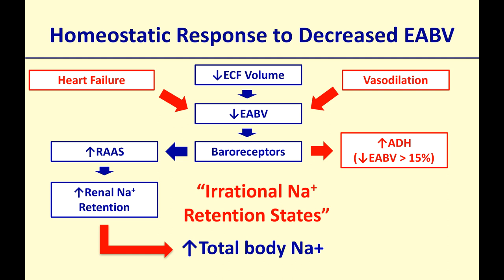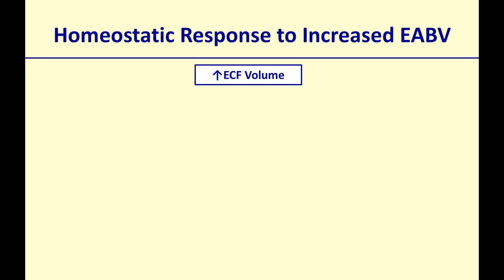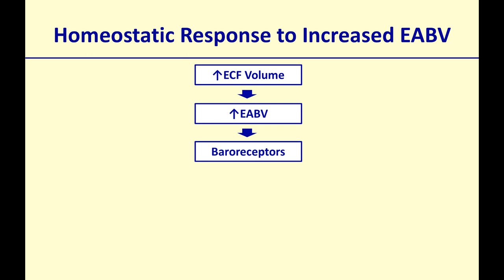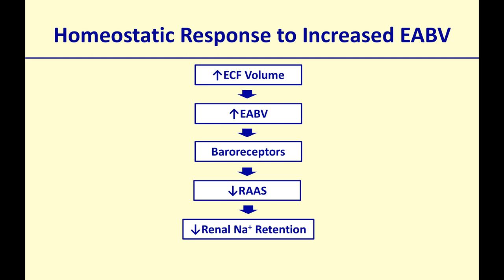In the opposite case, when effective arterial blood volume is increased — usually because ECF volume is increased — the baroreceptors signal the opposite: inactivation of the RAS system, decreasing sodium retention by the kidneys. This lowers total body sodium and therefore decreases ECF volume as well.